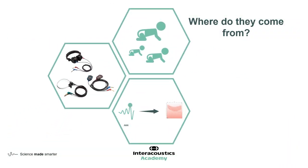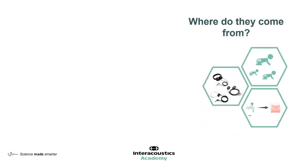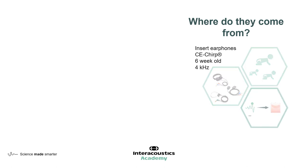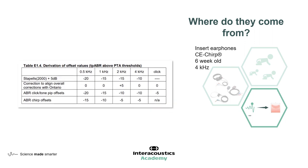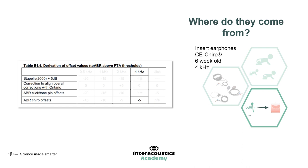So we have our ABR offset, our transducer corrections, divided up into different age groups. The authors of the BSA correction factors paper brought these together — let's look at how this works. Let's take just one example: insert earphones, CE chirp stimulus, testing a six-week-old at four kilohertz. First, we need our ABR offset — from the Stapels meta-analysis plus the 5 dB. For four kilohertz, this gives us an ABR offset of minus 10. There was no correction to align with Ontario, and as we are looking at a chirp, we end up with an ABR offset of minus five.